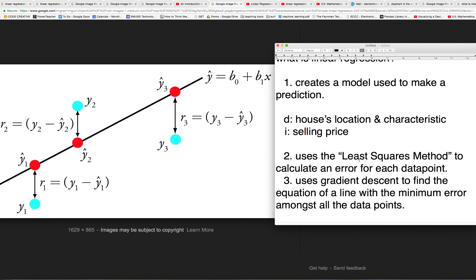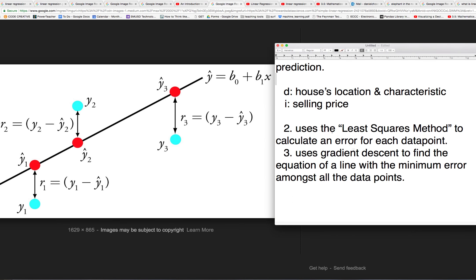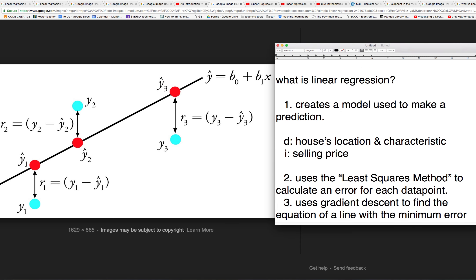So linear regression uses the least squares method to calculate an error for each data point. And so let's assume that this line here is the prediction. This is the model that was created by the linear regression algorithm. This line right here, given all of the data points. These blues are all the data points.